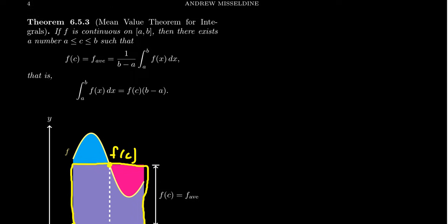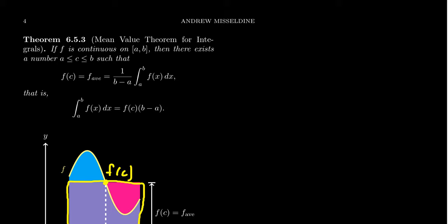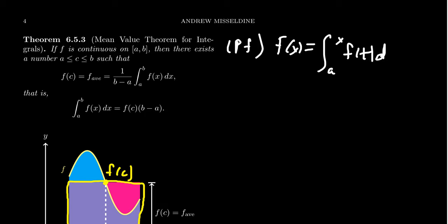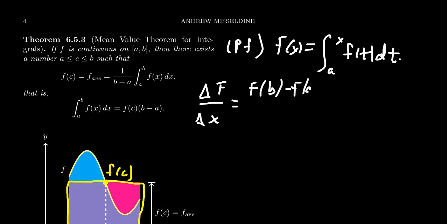So why does such a point exist? To prove this, we can introduce an integral function — capital F of x defined as the integral from a to x of f of t dt. By the fundamental theorem of calculus, we can define functions using integrals where the upper limit is itself a variable. The average rate of change of capital F on the interval a to b is given by F of b minus F of a, all divided by b minus a.